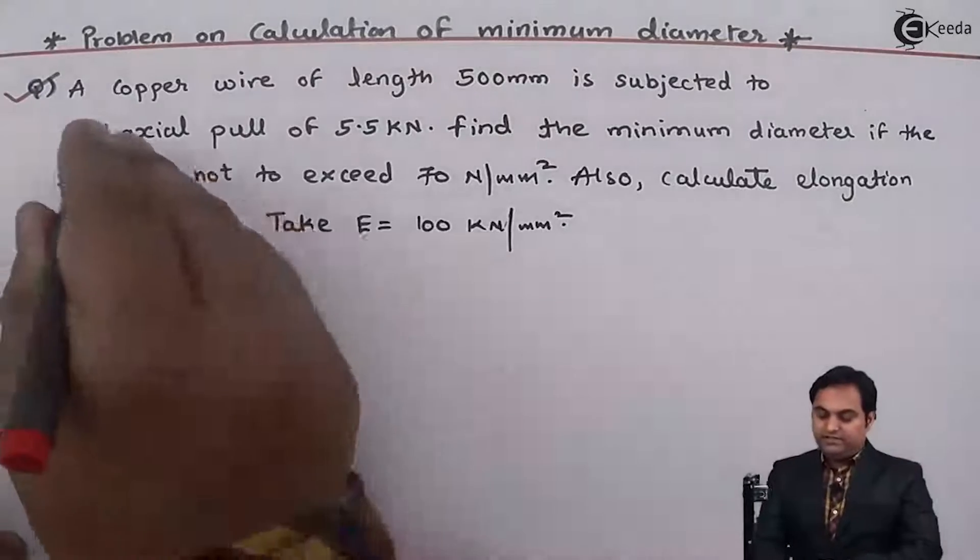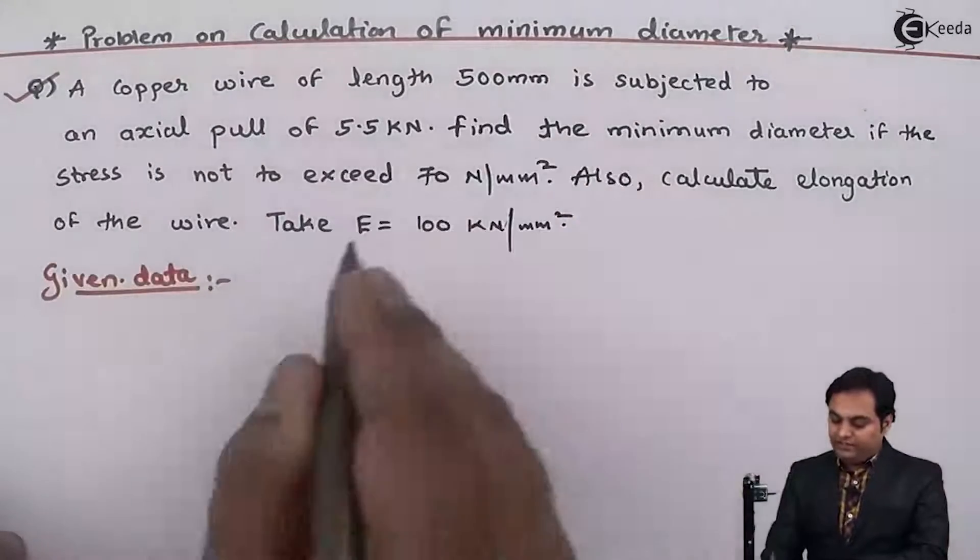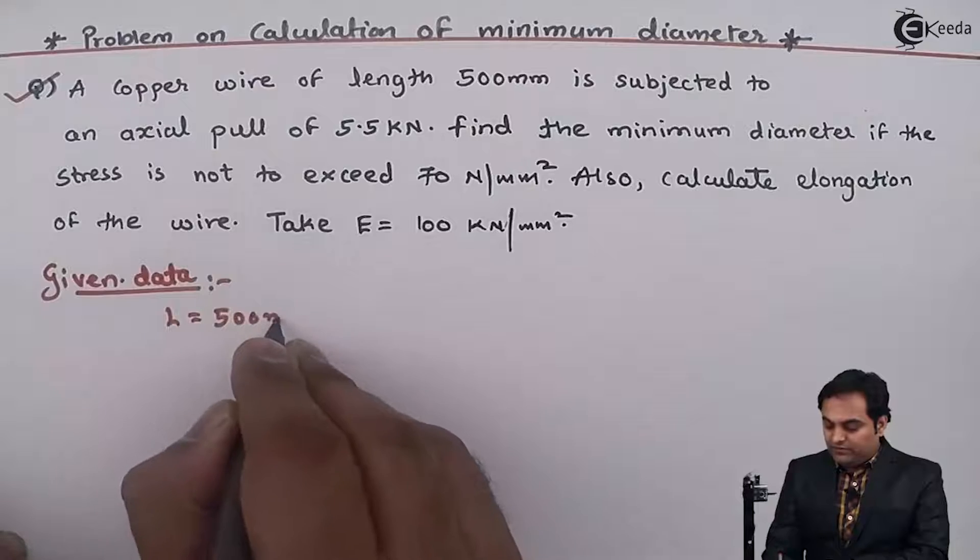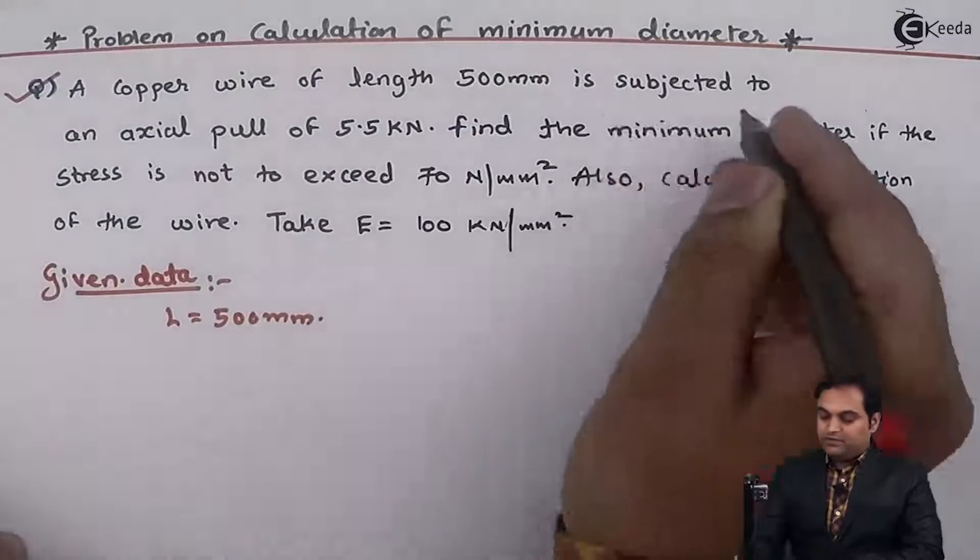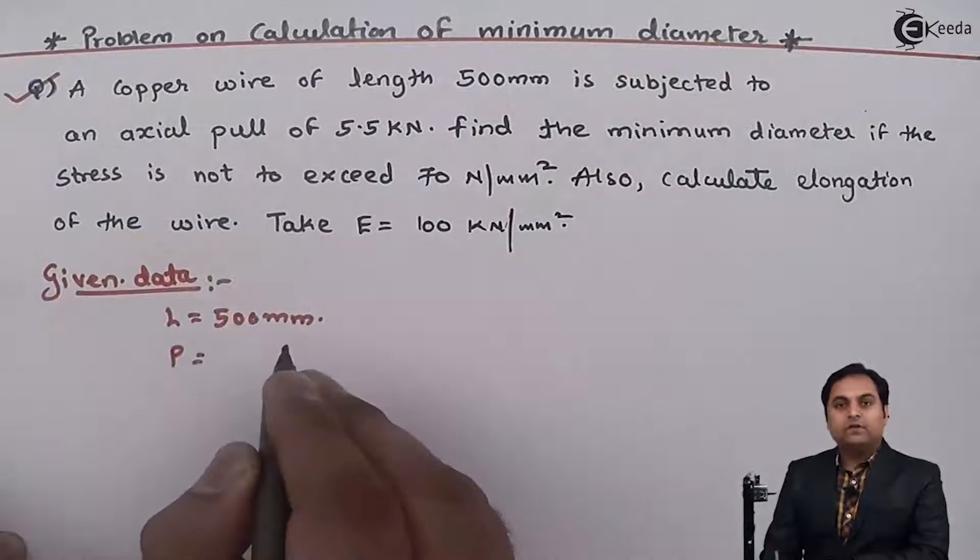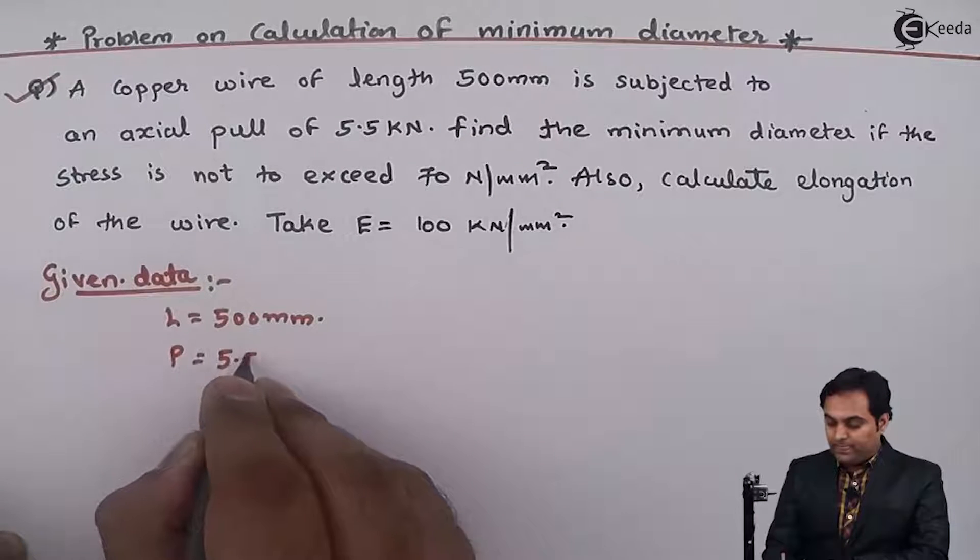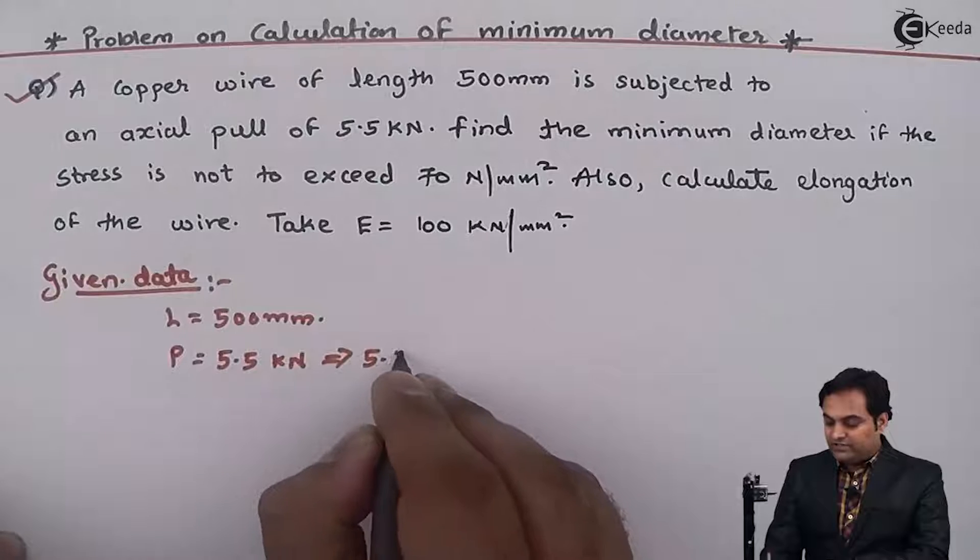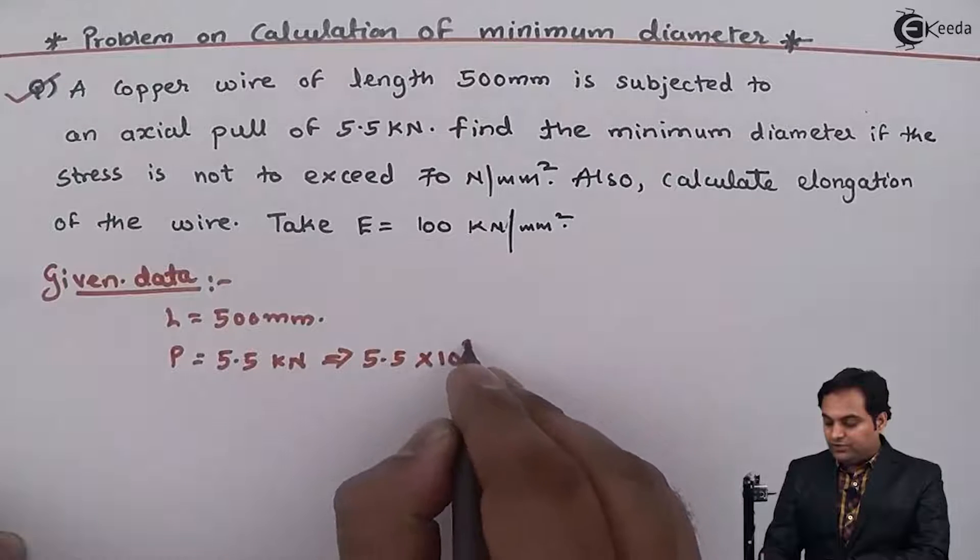It is given that there is a copper wire having length 500 mm. So L is equal to 500 mm, is subjected to an axial pull. The value of load is given 5.5 kN. So here we have this as 5.5 into 10 raise to 3 Newton.